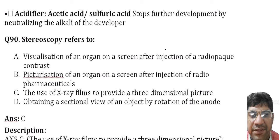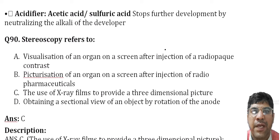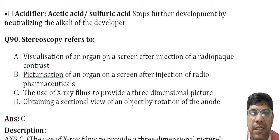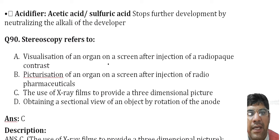Stereoscopy refers to the use of X-ray film to provide a three-dimensional picture. It involves creating a three-dimensional effect in an image by presenting two images separately to the left and right eyes of the viewer.